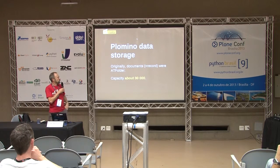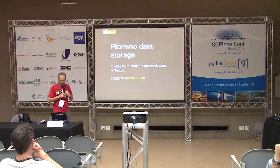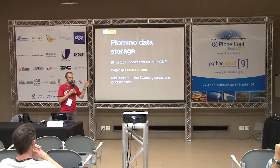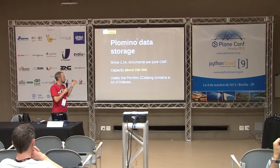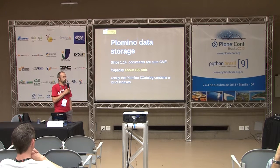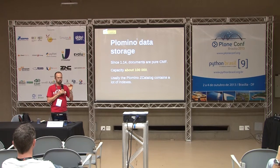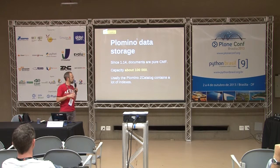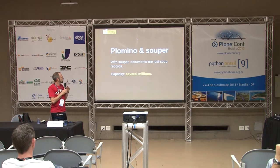Originally in Plomino, records — which we call documents — were just AT folders, so about 30,000 records was kind of the maximum. To improve that, we moved to pure CMF using a BTree folder with CMF objects, and we reached about 100,000 — that's okay. But if you want to go higher, it can be difficult: you have to optimize, make sure you don't have too many indexes in your ZCatalog, because Plomino uses a local catalog for every database and it can slow everything down. Now, with Soup, we can reach millions — you have millions of records in your ZODB and it just works really nicely.